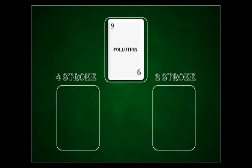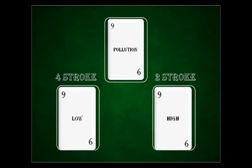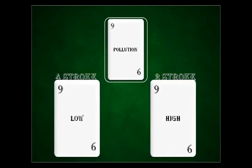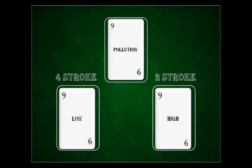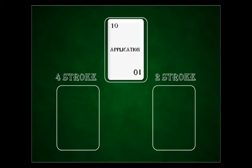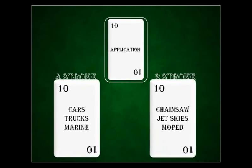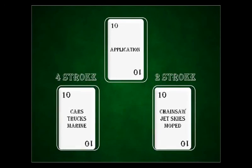Next is pollution. 2-stroke engines are not as efficient in burning fuel, so they pollute more than a 4-stroke engine. Next is application. 4-stroke engines produce a low but sustained amount of energy, making them ideal for trucks that need to travel long distances without stopping. By contrast, the 2-stroke engine is capable of producing quick bursts of power that are not sustained for long periods, making it ideal for use in chainsaws and jet skis that stop from time to time.